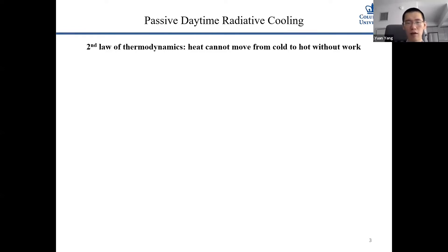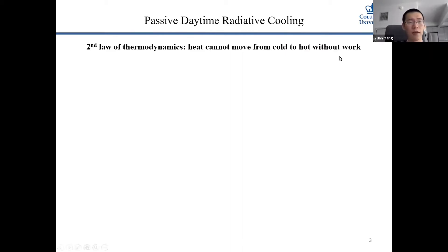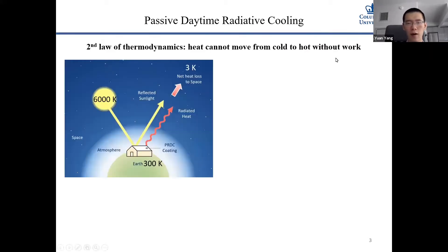Although we cannot violate the second law of thermodynamics, there is a way to circumvent it: find a cold source around us and transfer heat from the earth's surface to that cold source. If you move heat from hot to cold, you don't need to use electricity. And fortunately, we have a very good cold source around us — that's the universe itself.